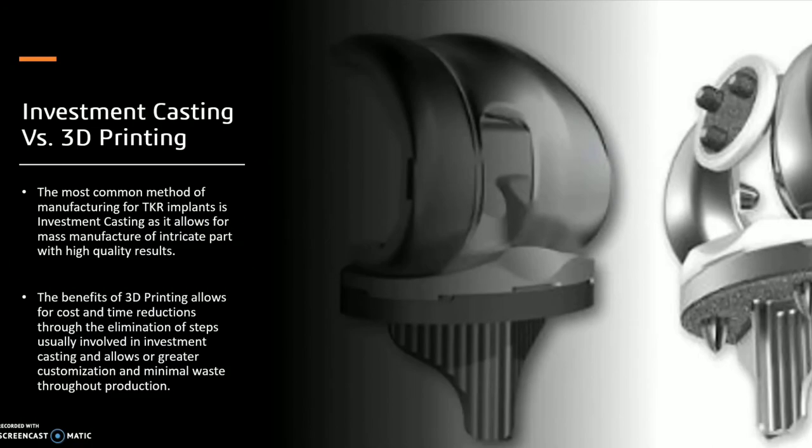Investment casting is the most commonly used manufacturing method for orthopedic implants. It allows for mass manufacture of intricate parts with high quality results. The benefits of 3D printing allow for cost and time reductions through the elimination of steps usually involved in the investment casting process, greater customisation, and minimal waste throughout production.